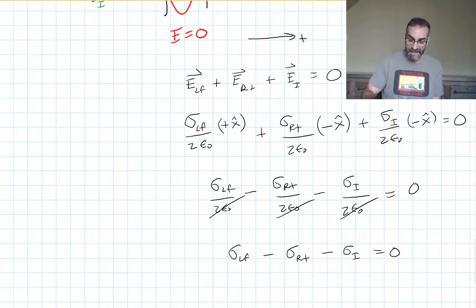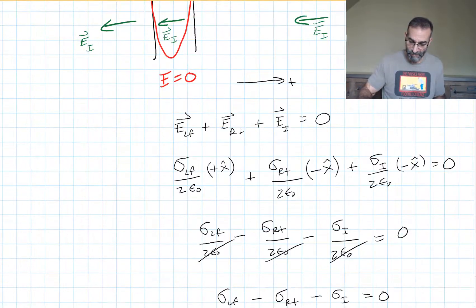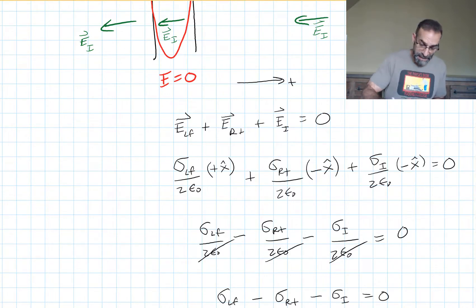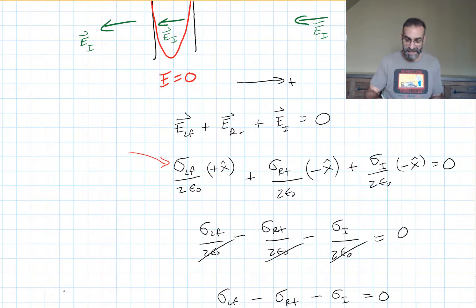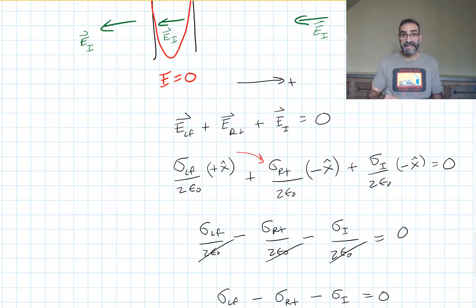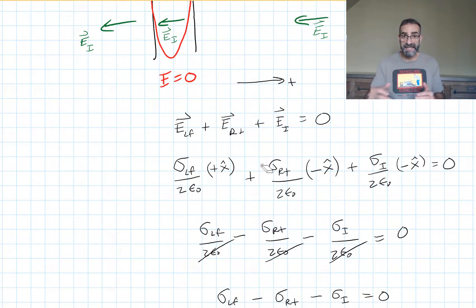I assumed all charges were positive when setting up this equation. If I was wrong and sigma_left is actually negative, putting a negative number in flips it to the negative x direction. If sigma_right is actually negative, it flips the sign and points to the right. It self-corrects at the end. That's why I always assume positive to start with.